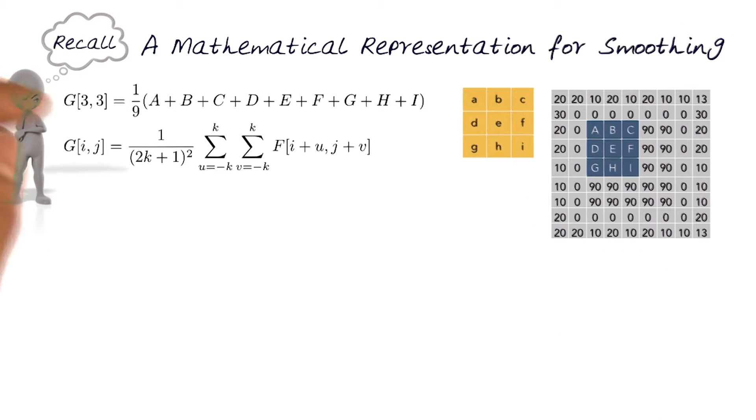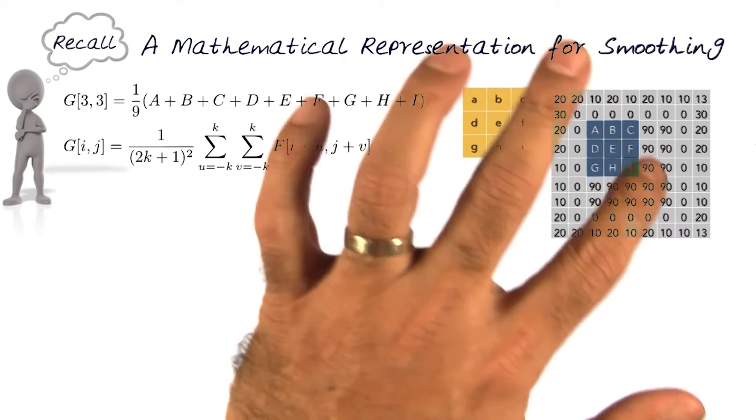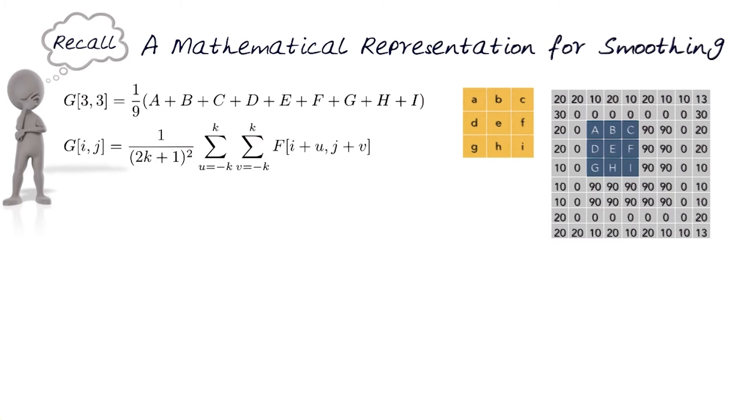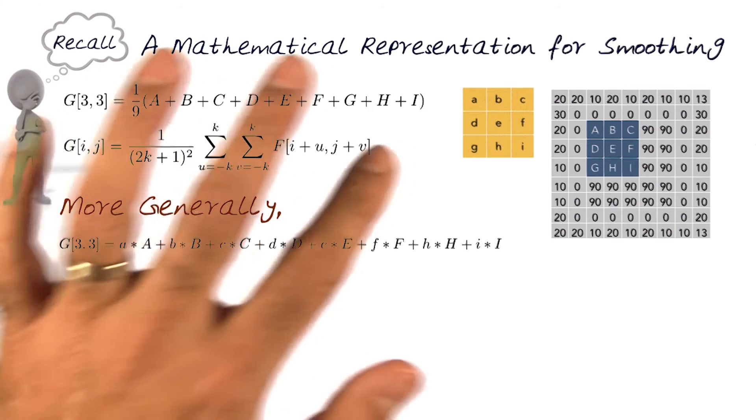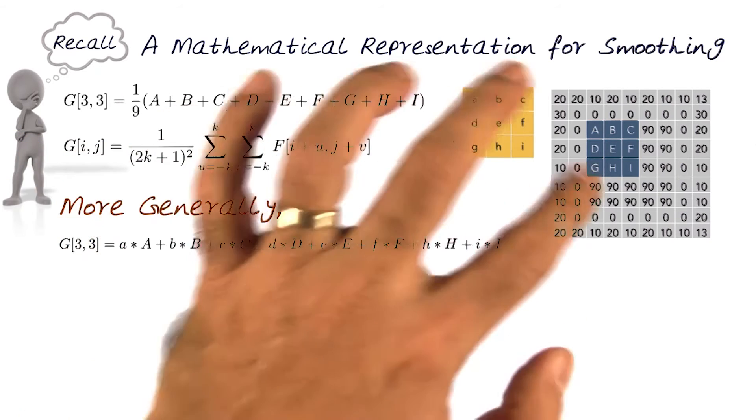You may recall that in that lecture, we looked at how we can mathematically represent this process of taking a kernel and applying it to a small region, a 3 by 3 one in this sample image. While this was for just doing the averaging, we can also do this in general terms for any kind of an image.